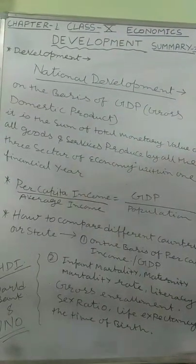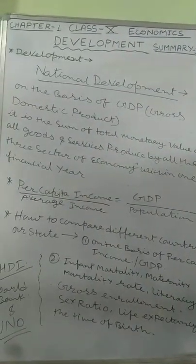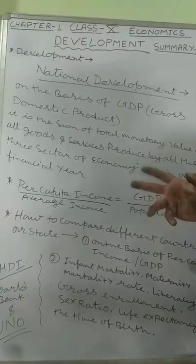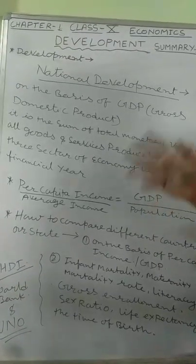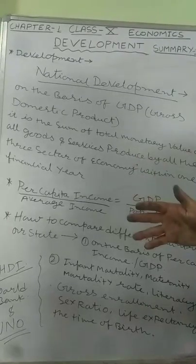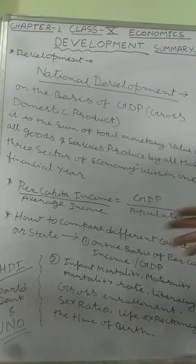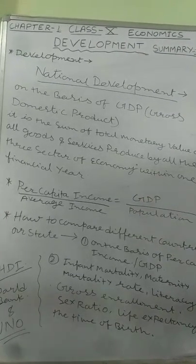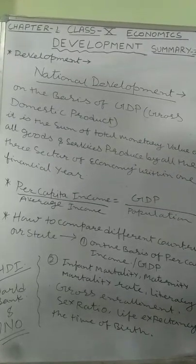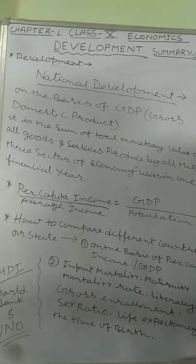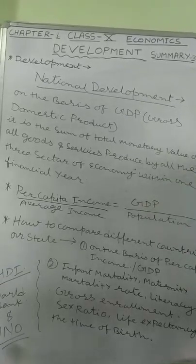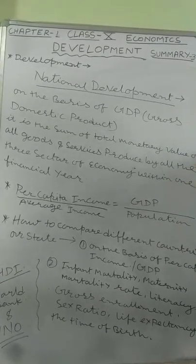Within one financial year, the monetary values of all goods and services produced by the three sectors of the economy in the country — their total sum — is what we call Sakal Gharelu Utpad, i.e., GDP. That is the broader concept of national income.